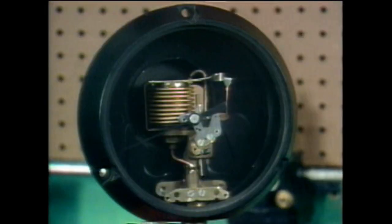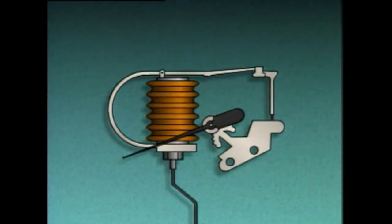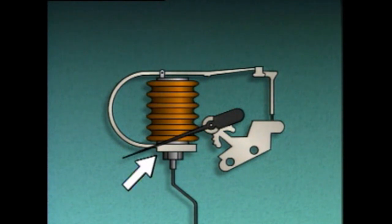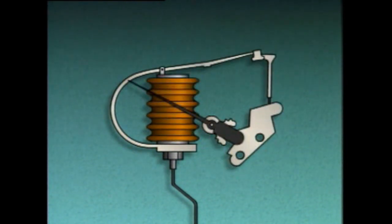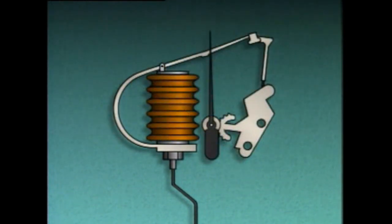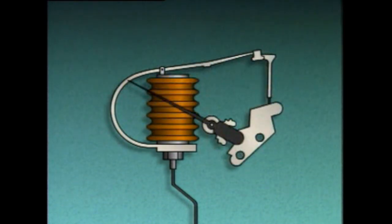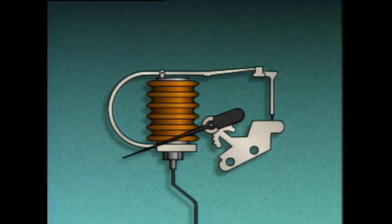Another type of pressure element that operates in a similar manner to a Bourdon tube is a bellows. In this arrangement, one end of the bellows is closed and the other end is connected to the pressure source. When pressure is applied, the bellows expands. As the closed end moves, it also moves a mechanical linkage which converts the movement to pointer travel. When the pressure is removed, the bellows contracts and returns to its original position.